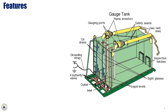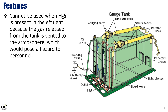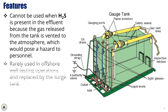While the atmospheric gauge tank is considered standard equipment in well testing, it has a major limitation — it cannot be used when H2S is present in the effluent. That's because the gas released from the tank is vented directly into the atmosphere, creating a serious hazard for personnel nearby. As a result, this type of tank is rarely used in offshore well testing operations today. Instead, it has been largely replaced by surge tanks, which offer better safety and containment.